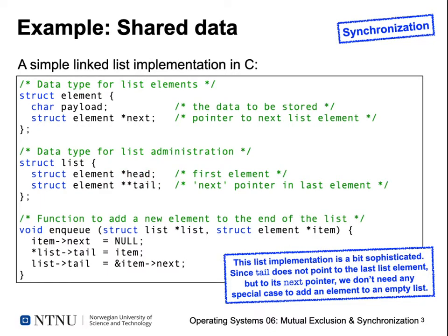In the struct list, we have a head pointer to the beginning of the list, and something a bit more special: a pointer to a pointer to a struct element, which we call tail. In many list implementations this tail pointer directly points to the last struct element. But here we use a trick — by using a pointer to a pointer, we can directly point to the next pointer inside the last struct element, which allows us to very easily add elements to a list of arbitrary length, including zero.